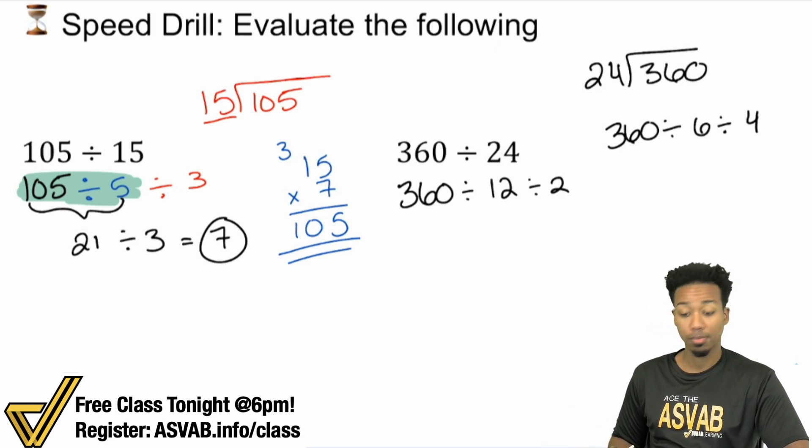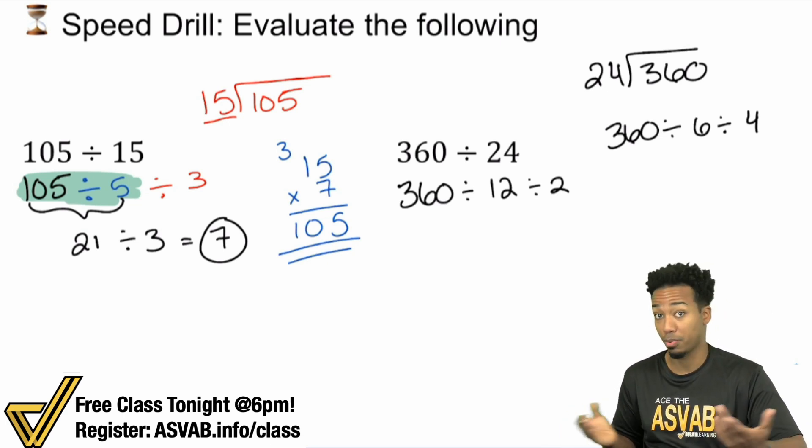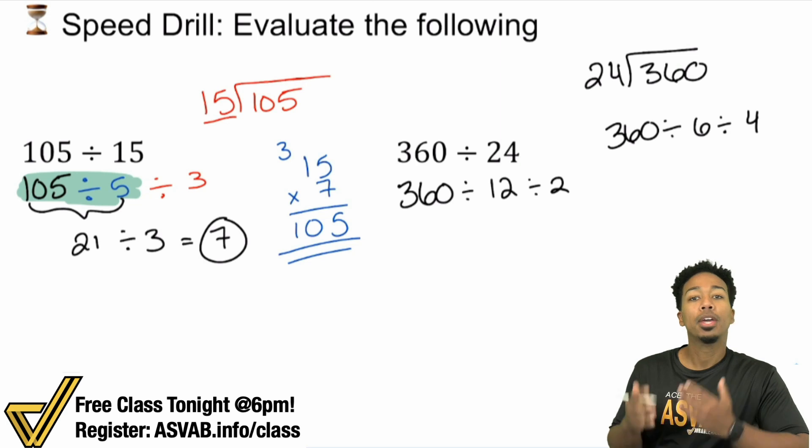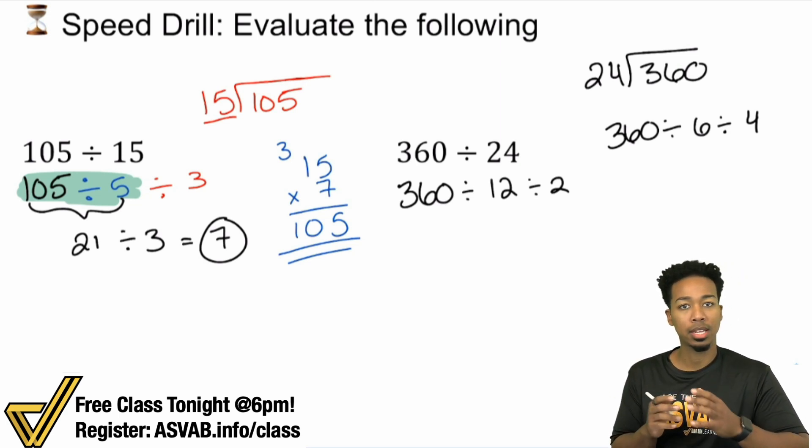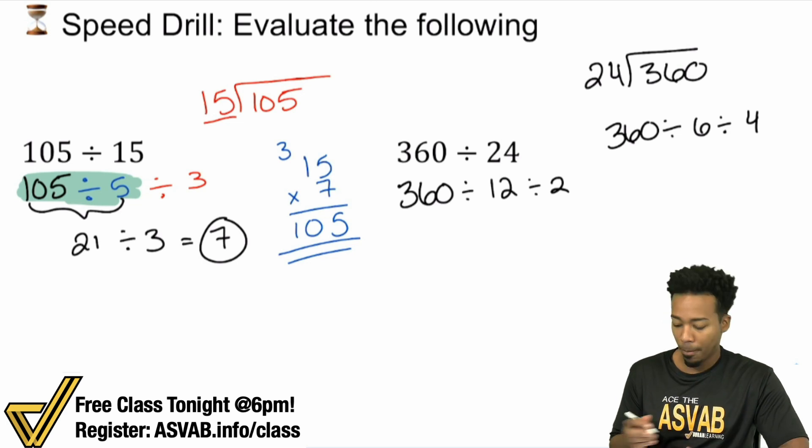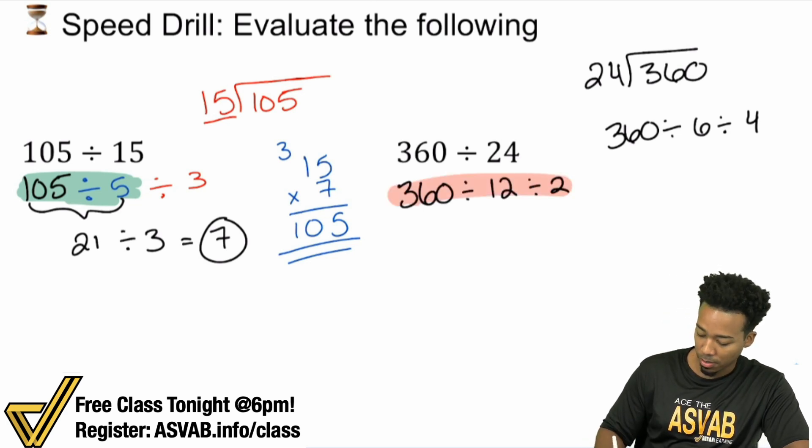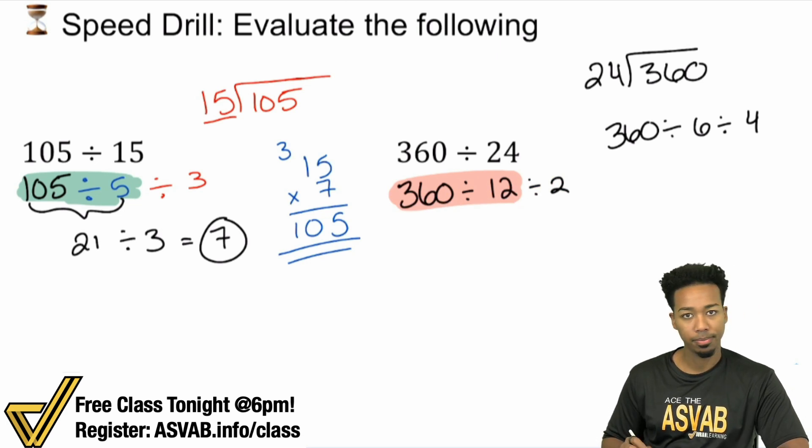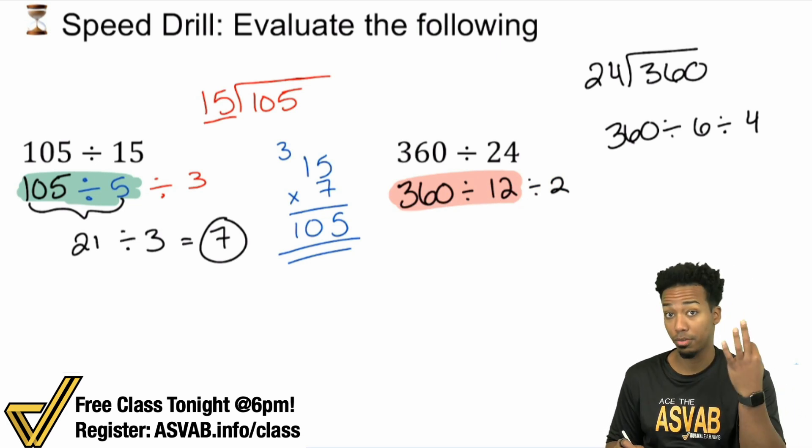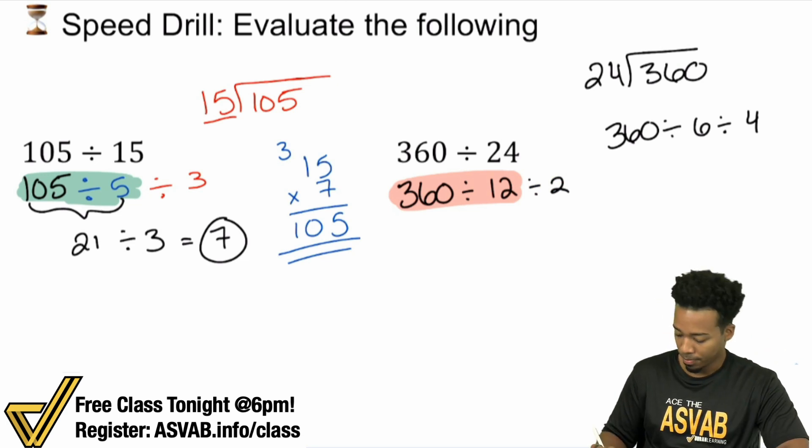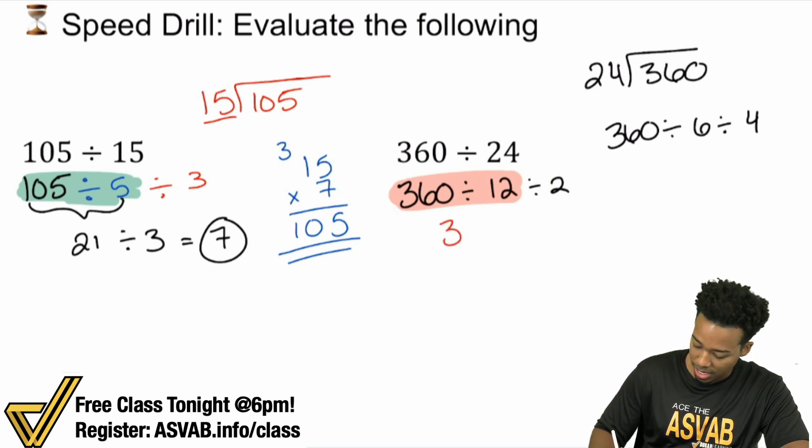That's another way to take care of things because six can go into 36 pretty easily. Again, it's up to you. You have to make sure that you are willing to try to find the easiest way to get it done, the quickest way to get it done. And here, I'm going to go with this first method right here. So first, 360 divided by 12. Well, 36 divided by 12 is three. So 360 divided by 12 is 30. So that becomes very, very quickly, very easily 30 divided by two.